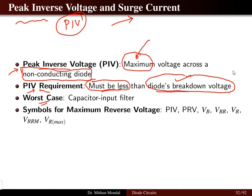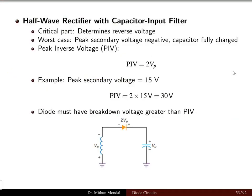Considering the worst case, at rated temperature, the capacitor input filter voltage will be the peak inverse voltage that the diode has to withstand. There are different symbols used for the peak inverse voltage: peak inverse voltage, peak reverse voltage, breakdown voltage, reverse breakdown voltage, reverse recovery voltage, and reverse maximum voltage. Different symbols have been used to specify the peak inverse voltage.